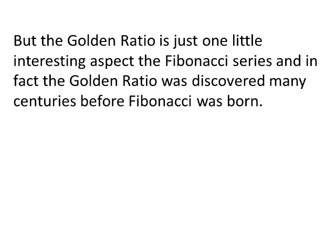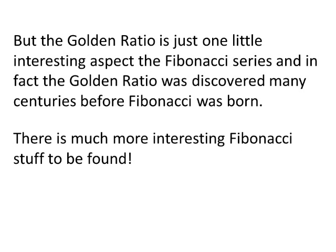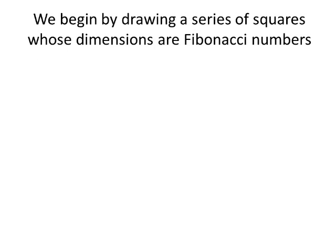But the golden ratio is just one little interesting aspect of the Fibonacci series, and in fact the golden ratio was discovered many centuries before Fibonacci was born. There is much more interesting Fibonacci stuff to be found. Let's take a look at the Fibonacci spiral. We begin by drawing a series of squares whose dimensions are Fibonacci numbers. The second number is 1, so we place a square with sides of size 1. The third number is also 1, so we place another square of size 1. The next number is 2, so we place a square of size 2. Then comes 3, next is 5. Each time we place a new square, we form a new rectangle, and each new rectangle is closer to the golden ratio rectangle.